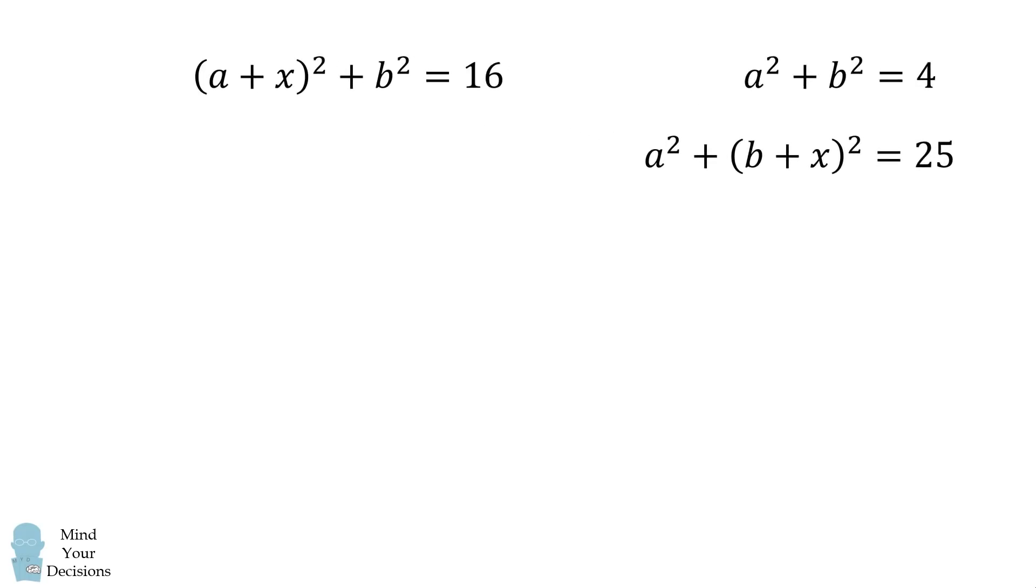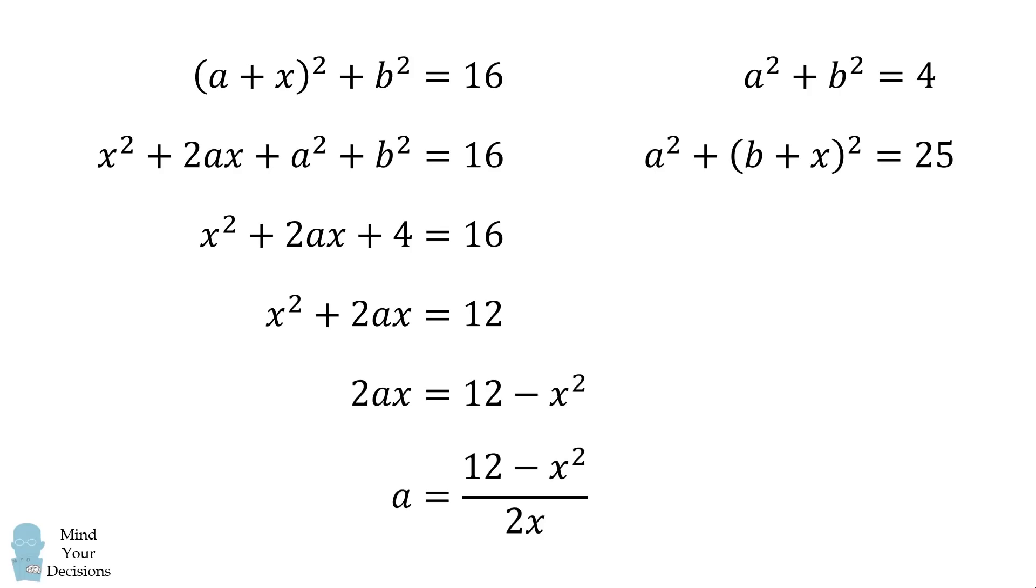Consider the middle equation. We first expand it out. Now notice we have an a squared plus b squared. We know that this is equal to 4, so we can substitute. From here, we will solve this equation for a. We'll subtract 4 from both sides, subtract x squared from both sides, and then divide both sides by 2x. We thus get what a is equal to in terms of x.